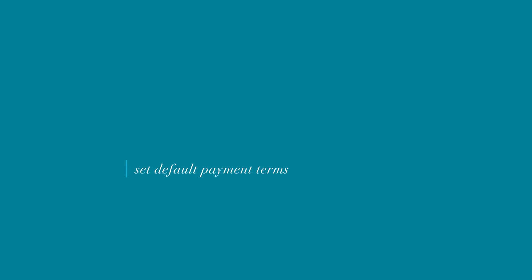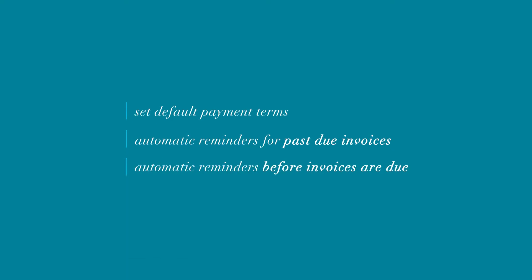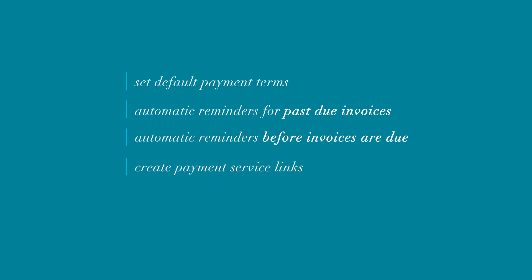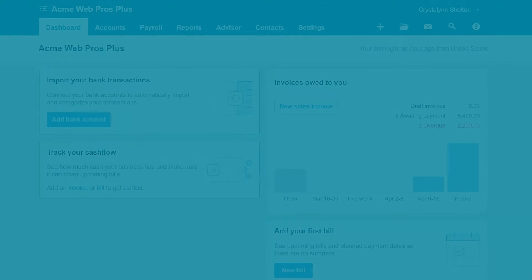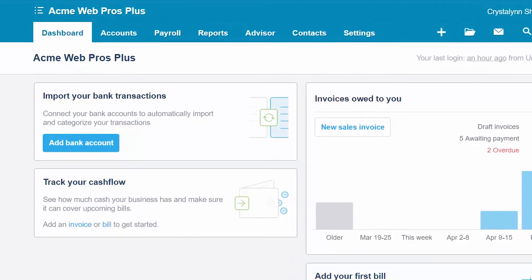In addition to the look and feel, you can also set default payment terms, create an automatic reminder to customers once invoices become past due, or set up a reminder a few days before the invoice is due — for example, a due in seven days reminder. You can also add a payment service link like Stripe or PayPal to invoices so that you get paid faster. Let's take a look at what information is included in the invoice settings tab.